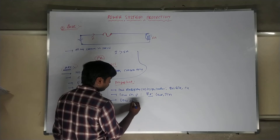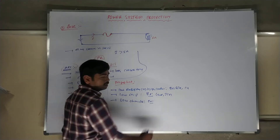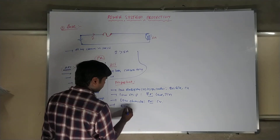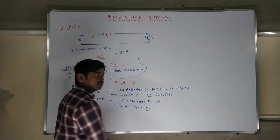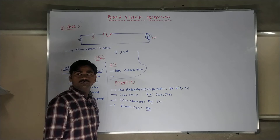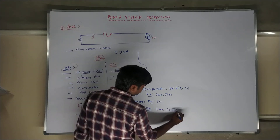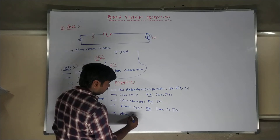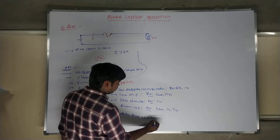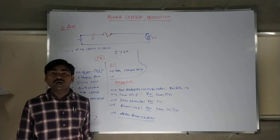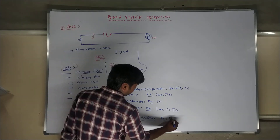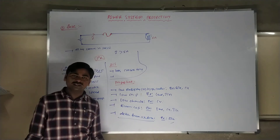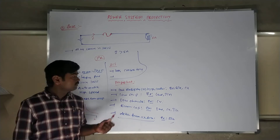Next is low ohmic loss — losses must be very less. The fuse should maintain a very small amount of loss; copper is an example of a best material here. Next, economic cost should be less — the cheapest materials are required. When you go to buy your fuse, the cost of the metal should be less; materials like lead, copper, and tin are suitable. One more important property is resistance to deterioration from oxidation — the fuse should not be oxidized, so the best material here is silver. These are the five best properties: low resistivity, low melting point, low ohmic losses, economical cost, and resistance to oxidation.